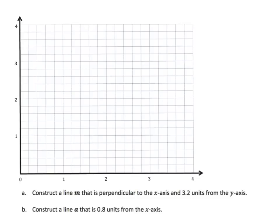Let's look at instructions for A and B. Construct a line M that is perpendicular to the x-axis and 3 and 2 tenths units from the y-axis. Let's first look at our scale: from 0 to 1 there are 5 intervals, so we label each by 2 tenths — 2 tenths, 4 tenths, 6 tenths, 8 tenths, and 1. It's important to figure out the value of these intervals, especially when they're not all labeled. From there, we can extrapolate the rest.